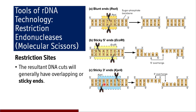The resultant DNA cuts will generally have overlapping or sticky ends. Once a restriction endonuclease acts on a DNA strand, it either cuts into a blunt end or a sticky end. RSA1 cuts this DNA molecule into blunt ends — there is no overhang. EcoRI cuts DNA with 5' sticky ends, producing 5' overhangs. KPN1 cuts the DNA molecule with 3' sticky ends, producing 3' overhangs.